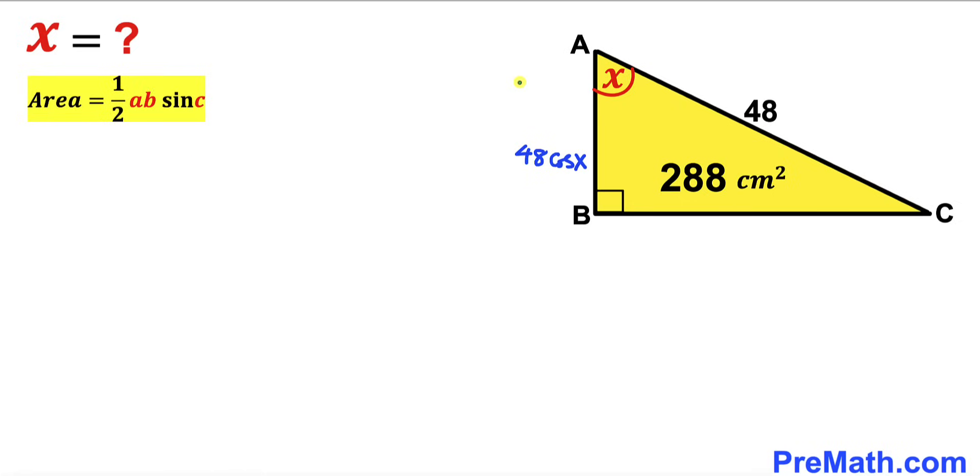In our case, if I call this side length lowercase a and this side length lowercase b, the area of this triangle has been given to us as 288 centimeters squared. Let's go ahead and fill in the blanks in this formula.